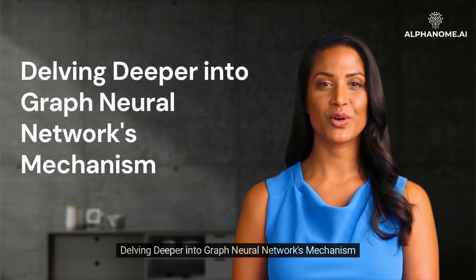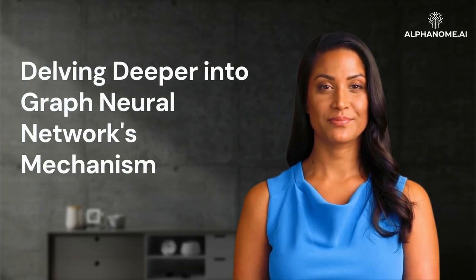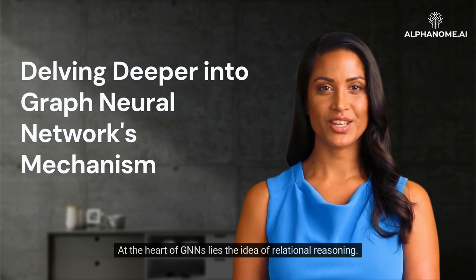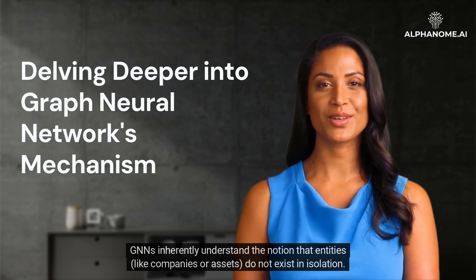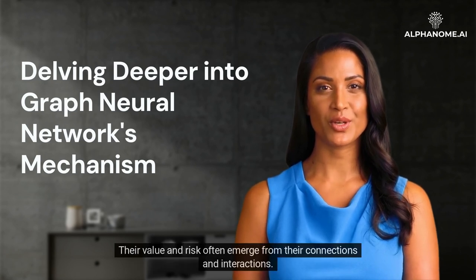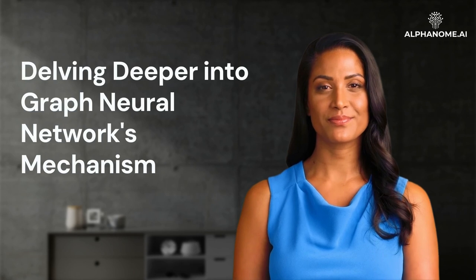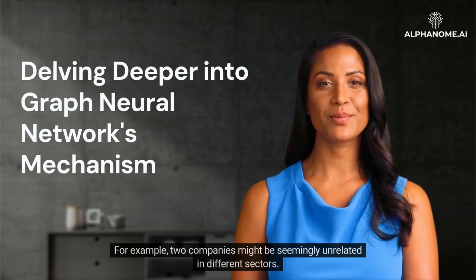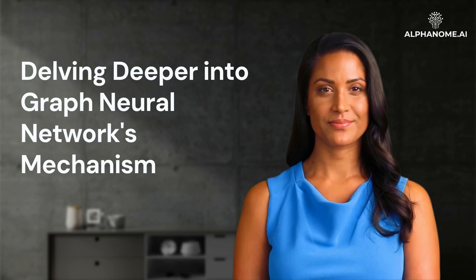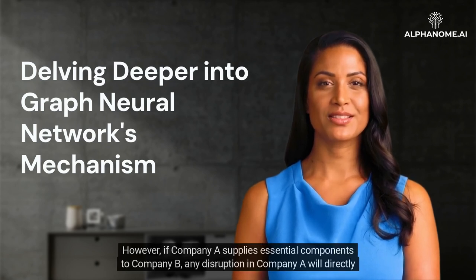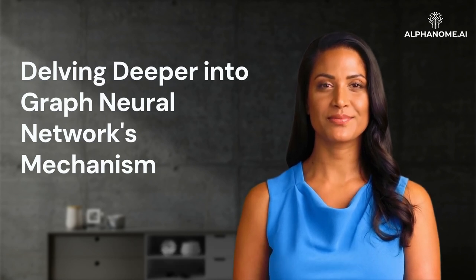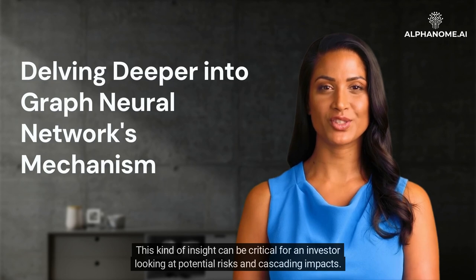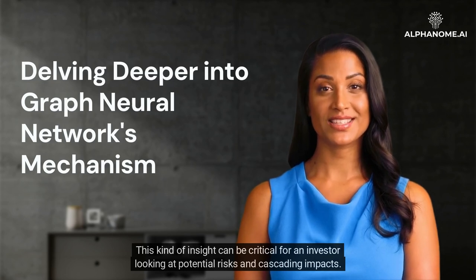Delving deeper into graph neural networks mechanism. At the heart of GNNs lies the idea of relational reasoning. GNNs inherently understand the notion that entities, like companies or assets, do not exist in isolation. Their value and risk often emerge from their connections and interactions. For example, two companies might be seemingly unrelated in different sectors. However, if company A supplies essential components to company B, any disruption in company A will directly impact company B. This kind of insight can be critical for an investor looking at potential risks and cascading impacts.